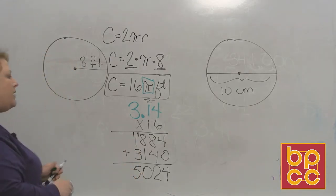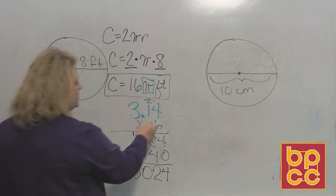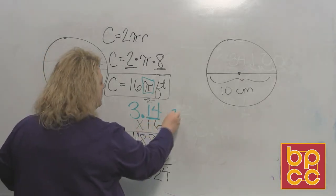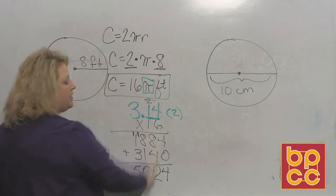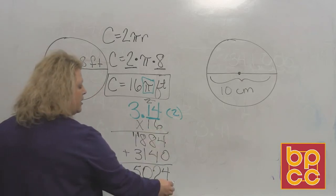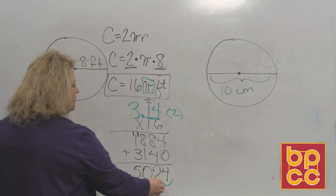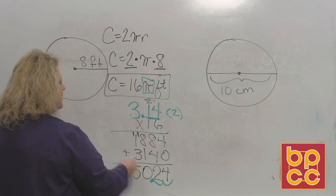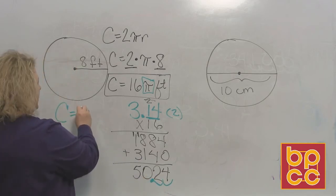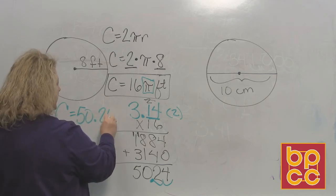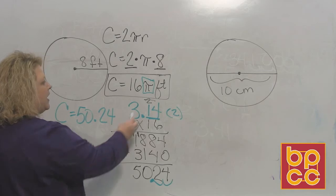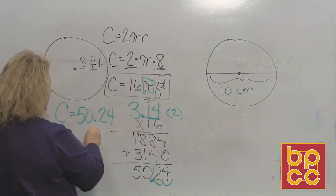Once you're done doing that, remember what I said, you count your number of decimal places. In this, I have two decimal places in the first, none in the second. So all I need is two decimal places in my answer. So you start from the right and move to the left, two spaces. So circumference, I'm going to move it up here, is 50.24, which would be 24 hundredths. And we measure that in feet.